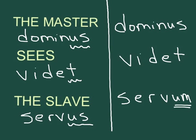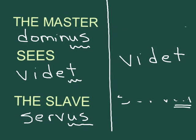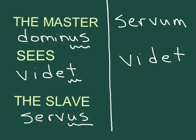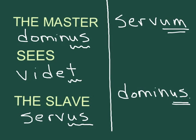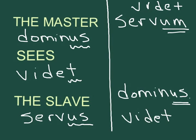You're going to learn different rules for this. The word order could be anything you want. So you could flip this around and it could be 'servum videt dominus.' Even though 'servum' comes first, because of its ending, we still know the master is seeing the slave. The verb can go wherever you want — 'servum dominus videt,' or even put 'videt' first. All of these sentences mean 'the master sees the slave.' Word order does not matter in the least.